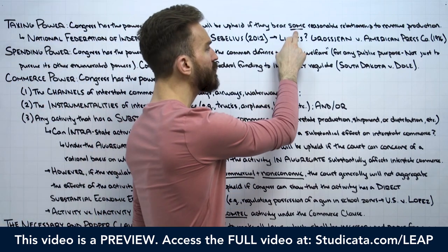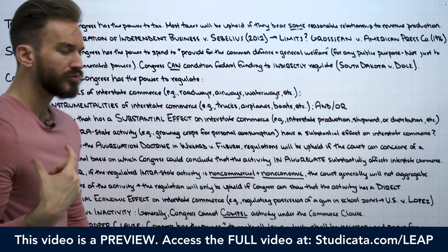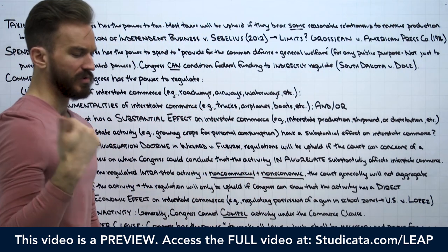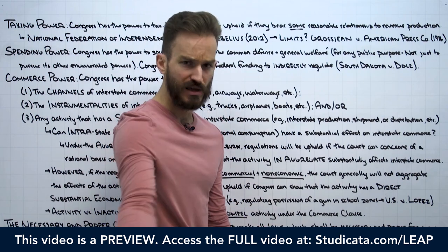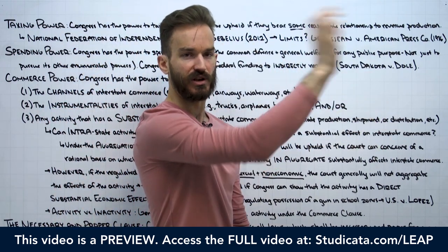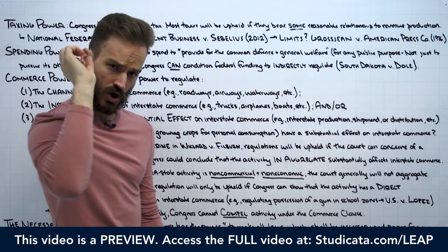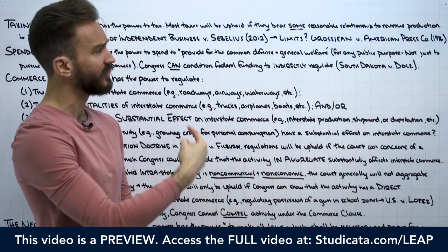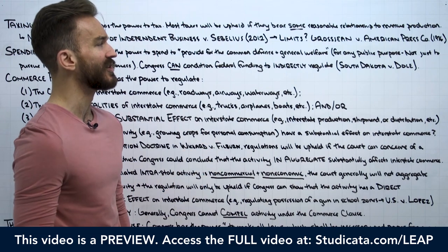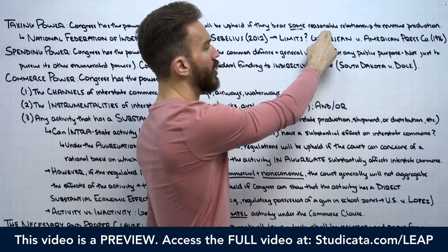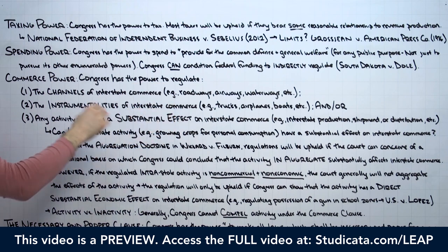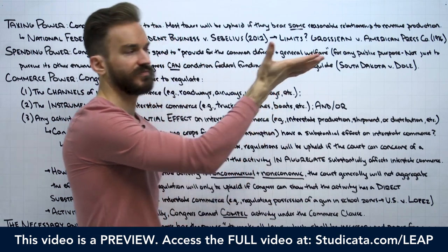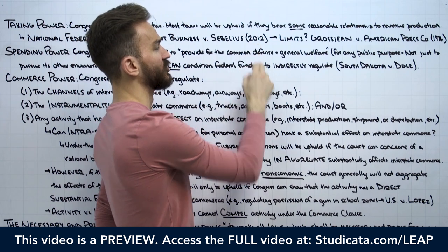The operative standard is 'some reasonable relationship' to revenue production. The primary purpose of the tax need not be to produce revenue — even though that's typically what we think of with taxes. The key case here is National Federation of Independent Business v. Sebelius, involving the Affordable Care Act being challenged in 2012.